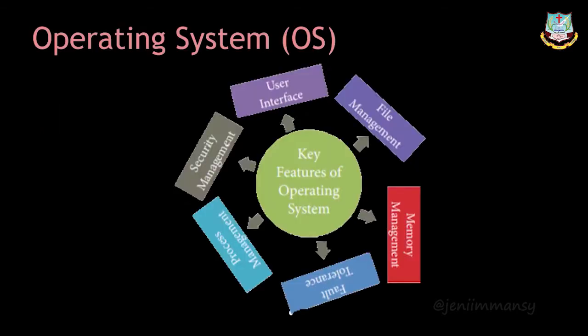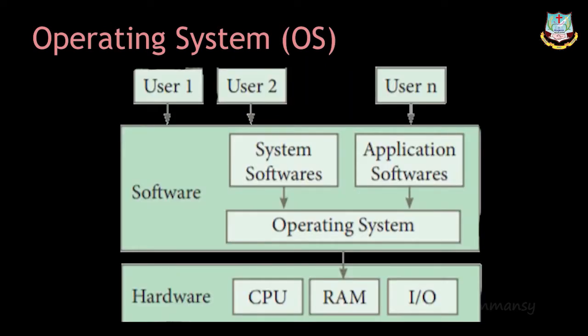The important functions of operating system — memory management, process management, device management, file management, security management, and controlling the overall system performance — we saw in the last chapter. Now we are going to see the overview of operating system. Here the software connects the hardware to the user. The software has two types: application software and system software, both connected to the operating system. Hardware includes CPU, memory devices, input devices, output devices, and monitors.